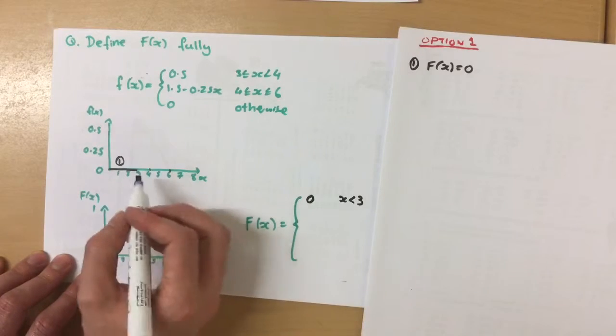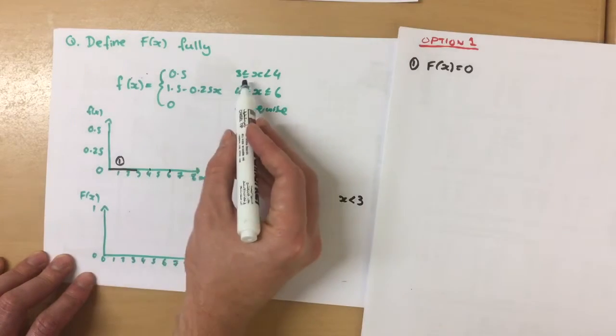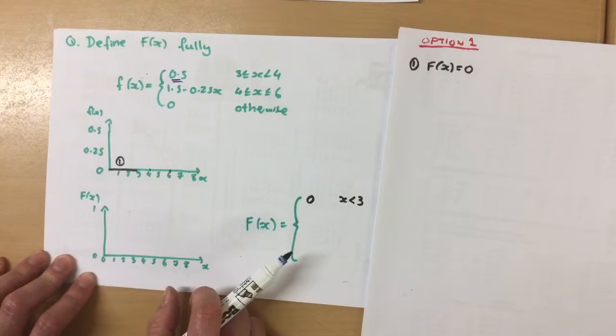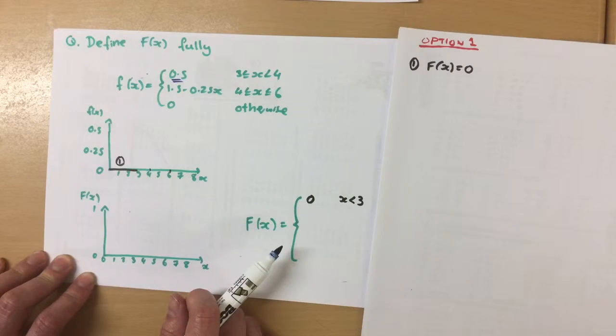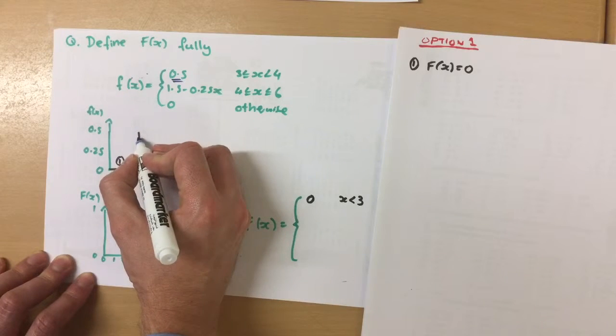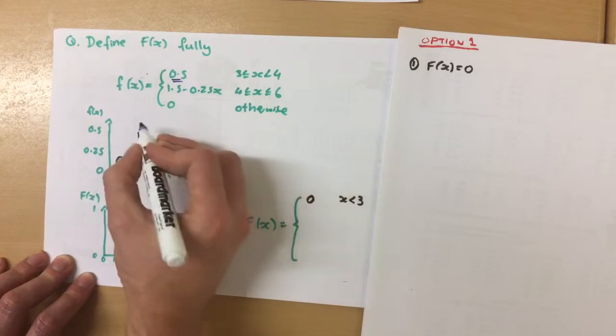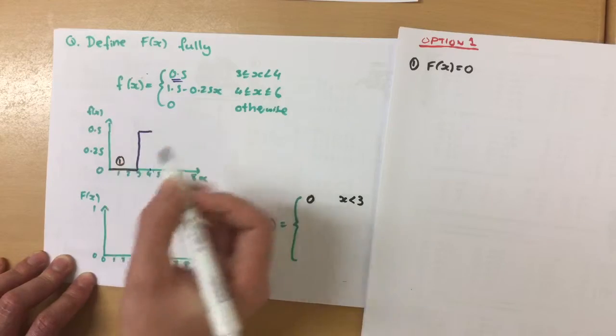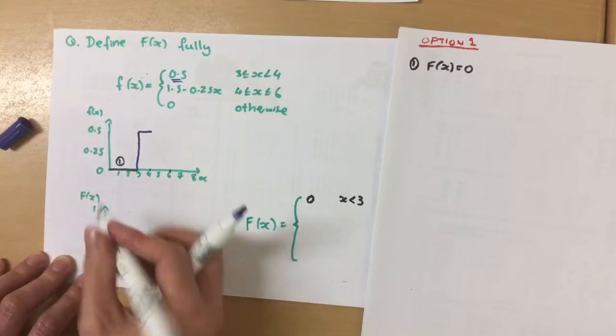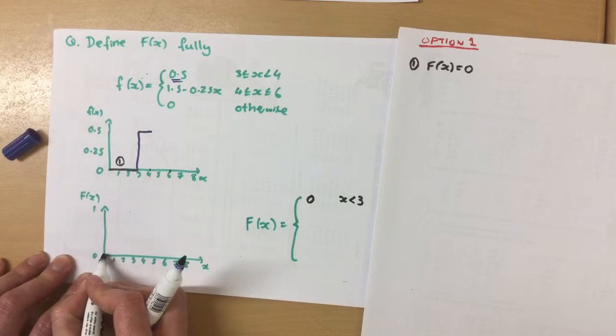Then, between 3 and 4, we're told that it's got a constant value of 0.5. So between 3 and 4, our probability density function jumps up to 0.5. So on the cumulative, the first bit is 0.5. So on the cumulative, the first bit is here.